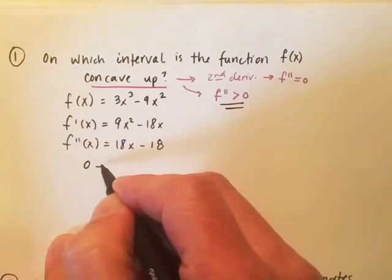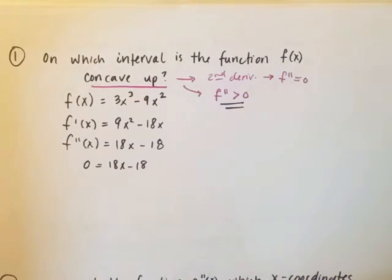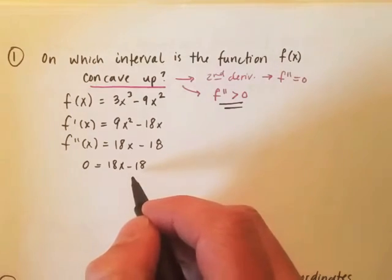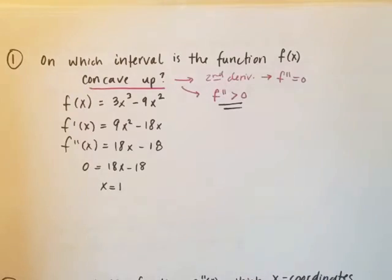So in a problem like this, we would set this equal to zero to find those possible inflection points where it's changing concavity maybe. And I would add 18, divide by 18, I'm going to get 1. Now, that's not my answer. That's just maybe where it's changing concavity.